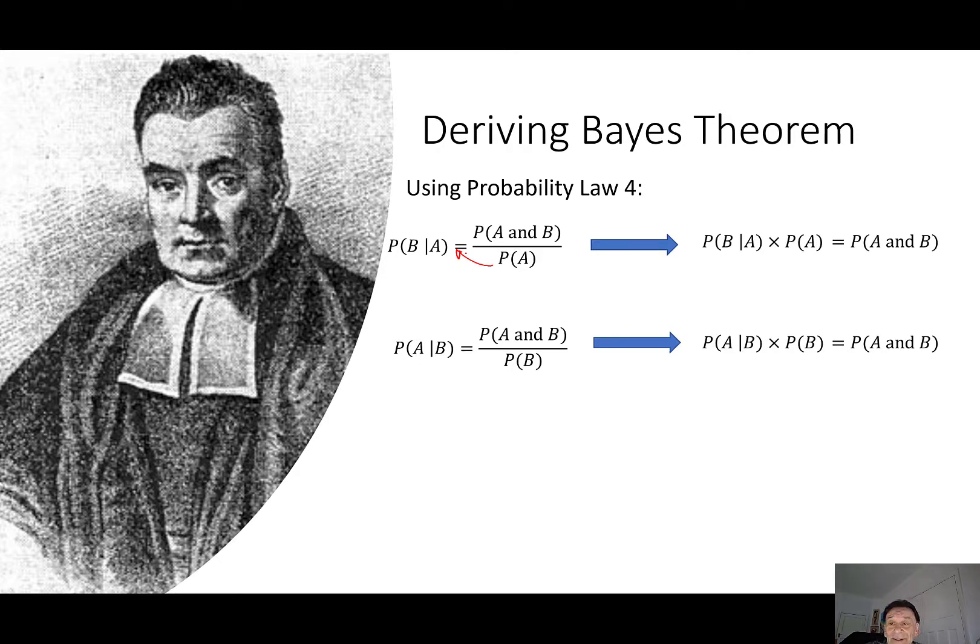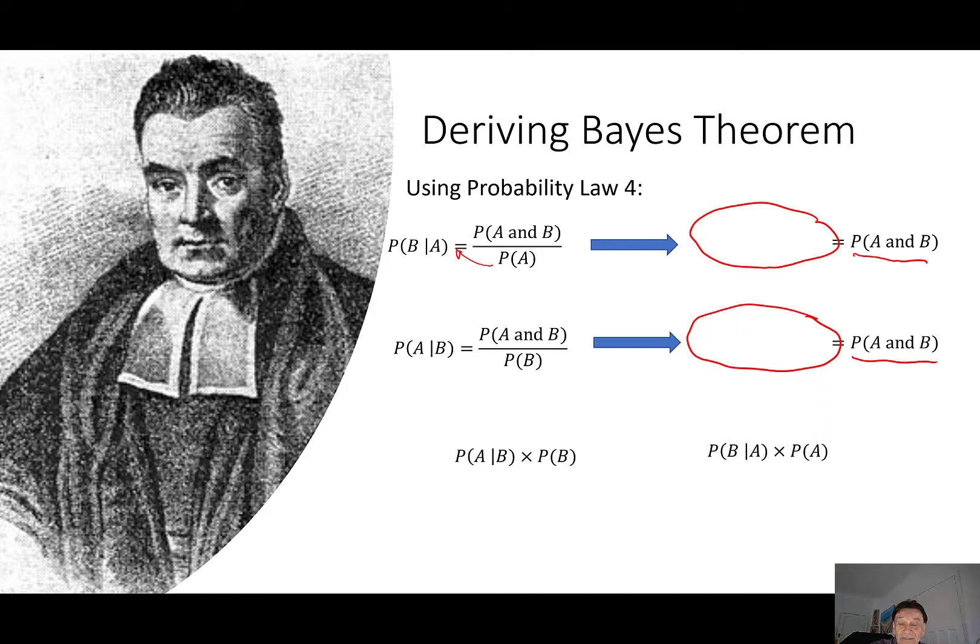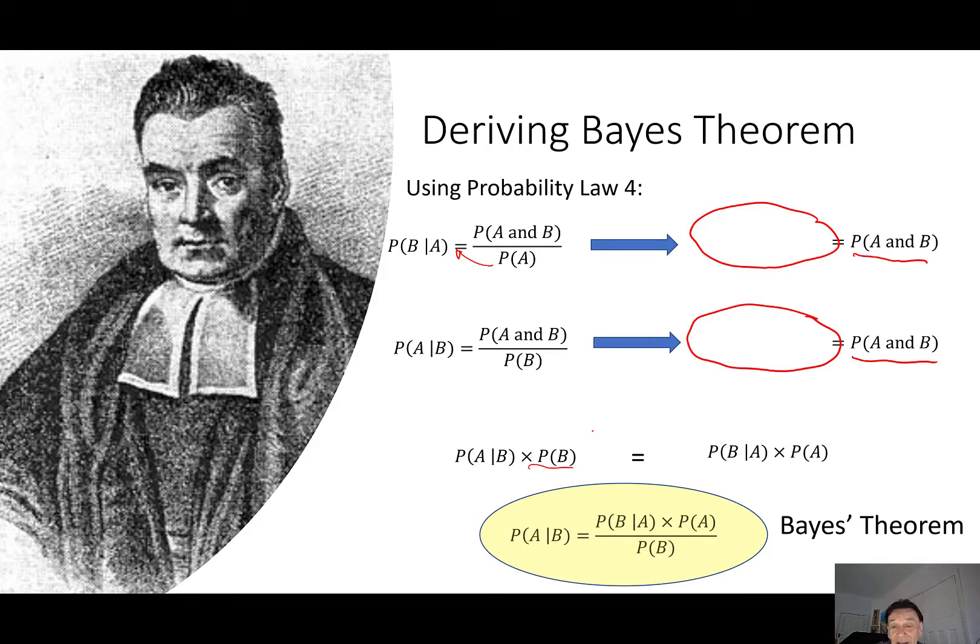And what we can see here is that the right-hand side, in both cases, is the same. And that means that these two things are equal. So let's just bring them down, and they're equal. And what we're going to do now is simply, so we've just divided both sides by probability of b, and hey, presto, that is Bayes' theorem. The probability of a given b is the probability of b given a times the probability of a divided by the probability of b. That is Bayes' theorem, and there's its proof.